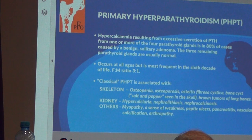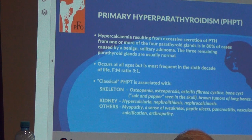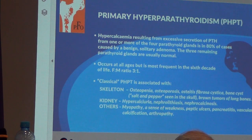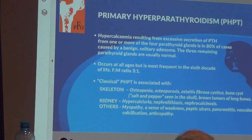Hypercalcemia results from excessive secretion of parathyroid hormone from one or more of the four parathyroid glands, and in 80% of cases is due to a benign adenoma of one of the parathyroid glands.